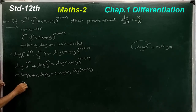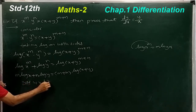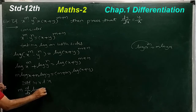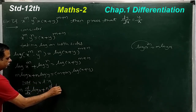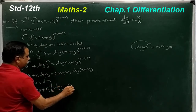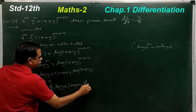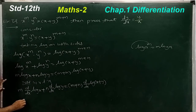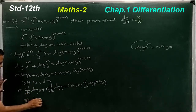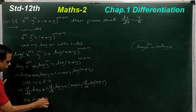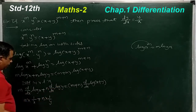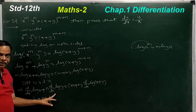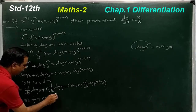Now differentiate both sides with respect to x. m is constant, so derivative of log(x) is 1/x. n is constant, so derivative of log(y) with respect to x is (1/y)·(dy/dx). Note that derivative of log(x) is simply 1/x, but derivative of log(y) with respect to x is (1/y)·(dy/dx).